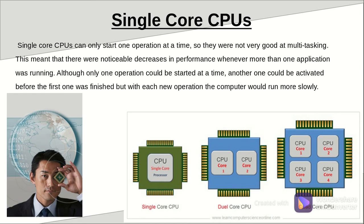There is a decrease in performance whenever more than one application is allowed to run on a single core CPU. The performance of these types of CPUs largely depends on their clock speed. So if you have two single core CPUs, the differences in performance can only be determined by the differences in their clock speed.